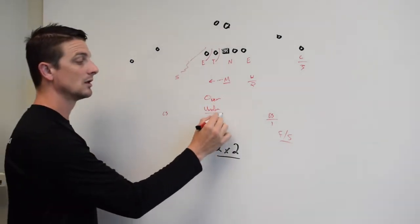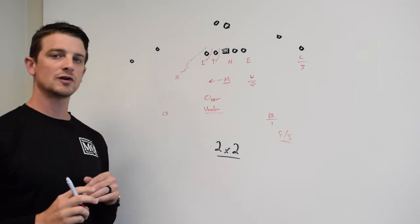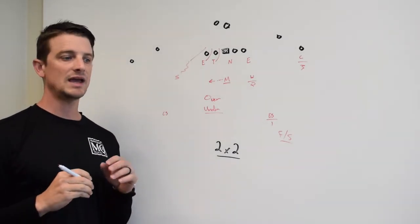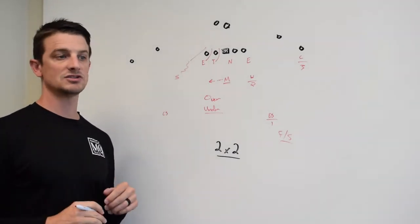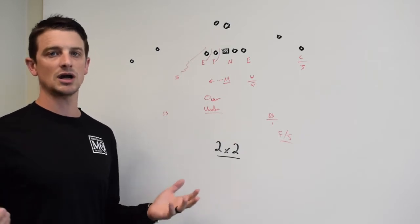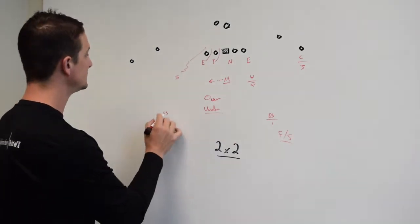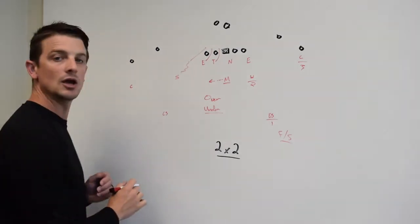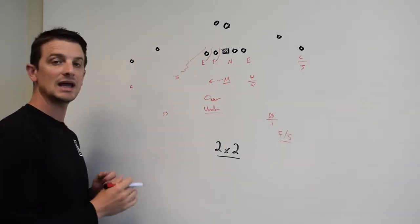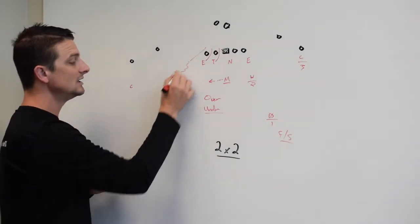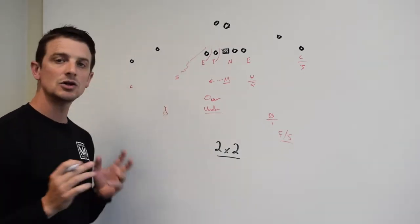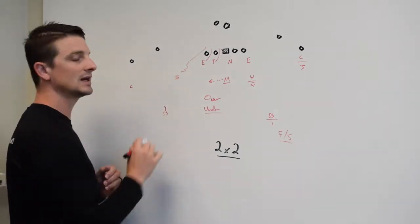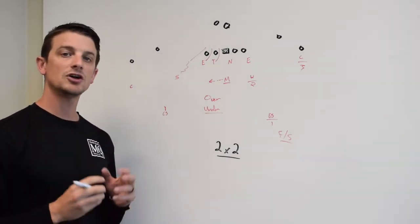Now, under is going to be most people's first option. This is kind of a pseudo cover three coverage. It's a robber coverage. In under, the safety is going to tell the corner, 'I'm going to be underneath, you're going to be over top.' So, instead of being at his base alignment at ten, as he works down, he's going to get the illusion that they're going to spin to single high and work down to eight.